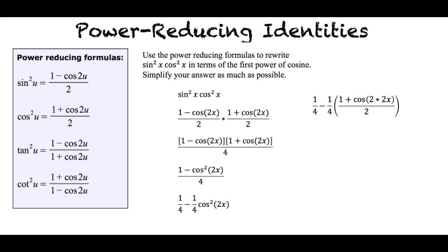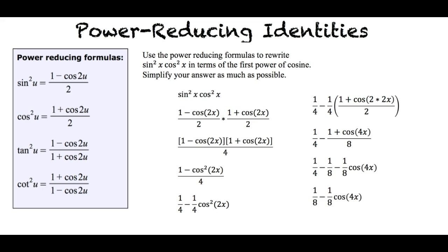First we multiply the 2 times the 2x in the cosine function. Then we multiply the 1 fourth times the 2 in the denominator. Next we separate the second fraction into two parts. Finally we simplify again by subtracting 1 eighth from 1 fourth, giving us 1 eighth minus 1 eighth times cosine 4x.